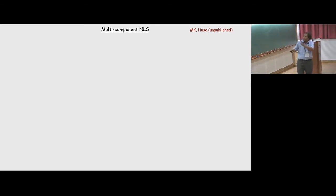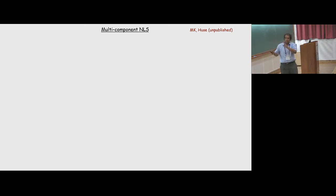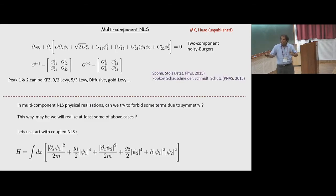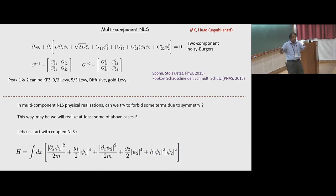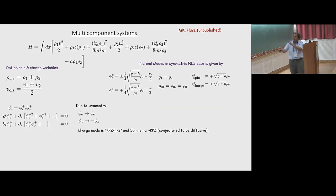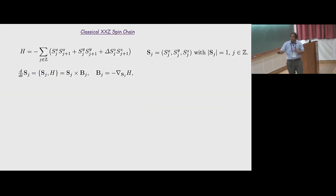Let me skip multi-component for now and spend time on spin chains, but I can discuss it later. The idea is that if you have more coupled nonlinear Schrödinger equations and discretize them — which are experimentally very relevant — you can have richer G matrices with multiple fields, and we can make some approximate predictions.